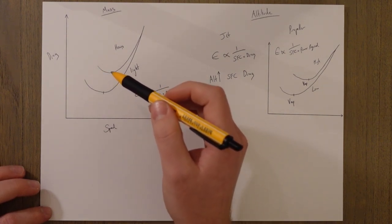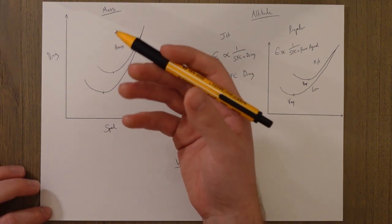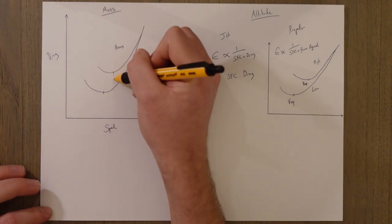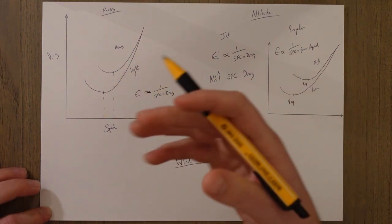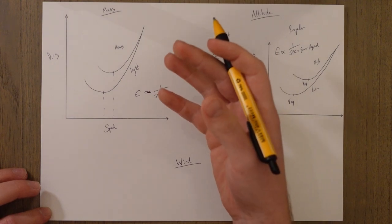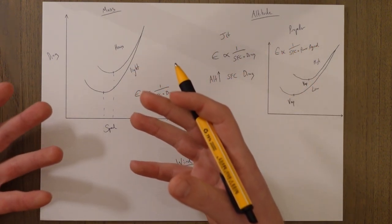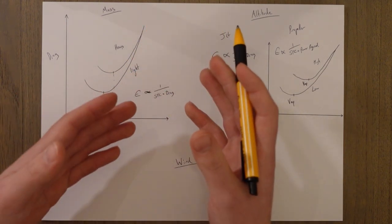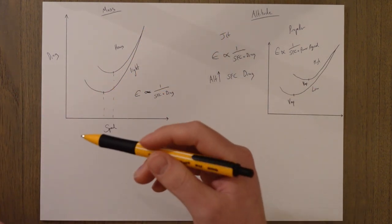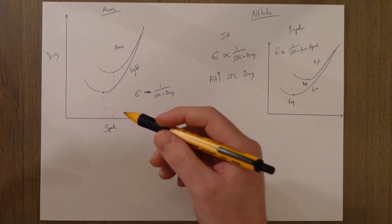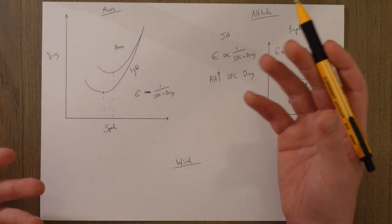This means that to fly at the speed for best endurance Vmd we need to fly faster and by flying faster we need more thrust which burns more fuel as a result. It's the same thing for propeller, there is more power required so we need to spin the propeller faster and have the engine going at a higher RPM and we therefore burn more fuel.